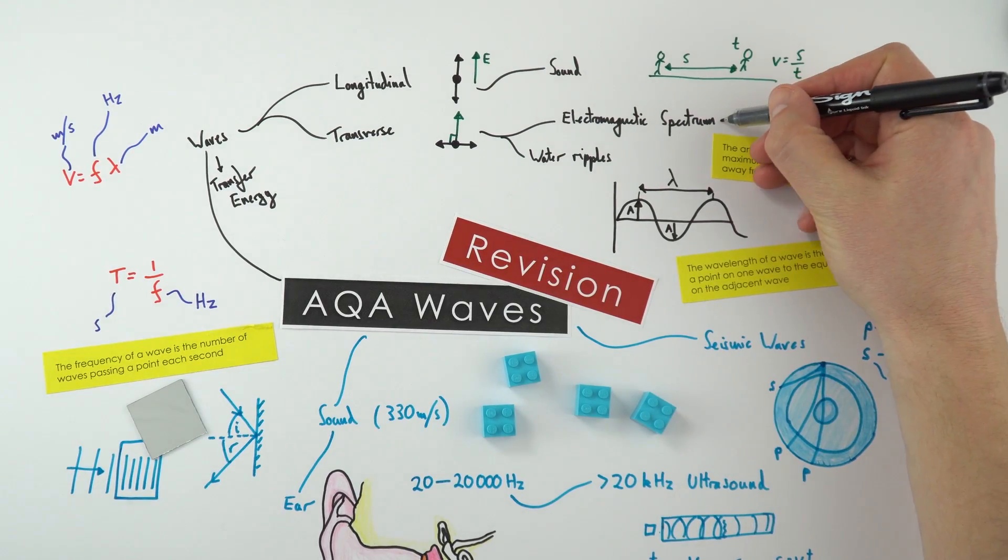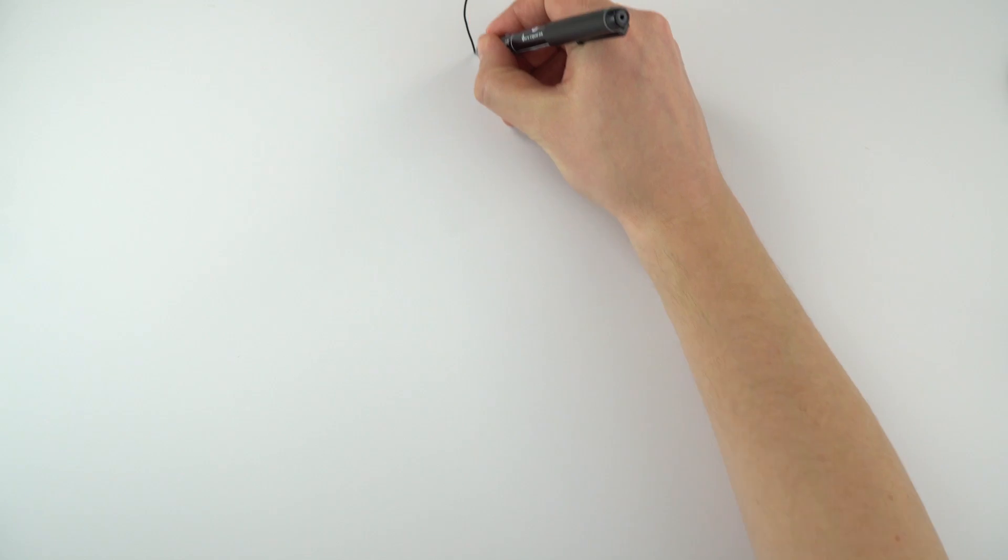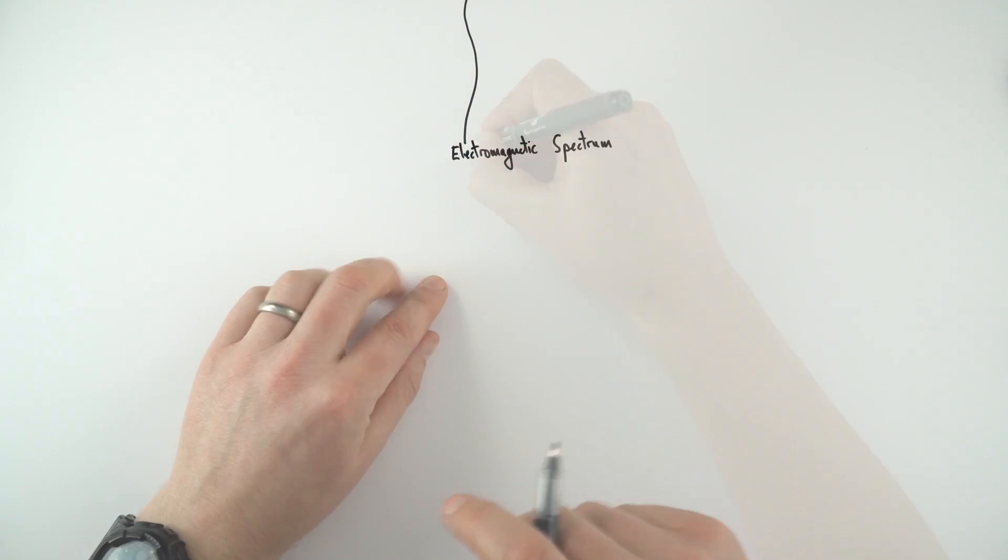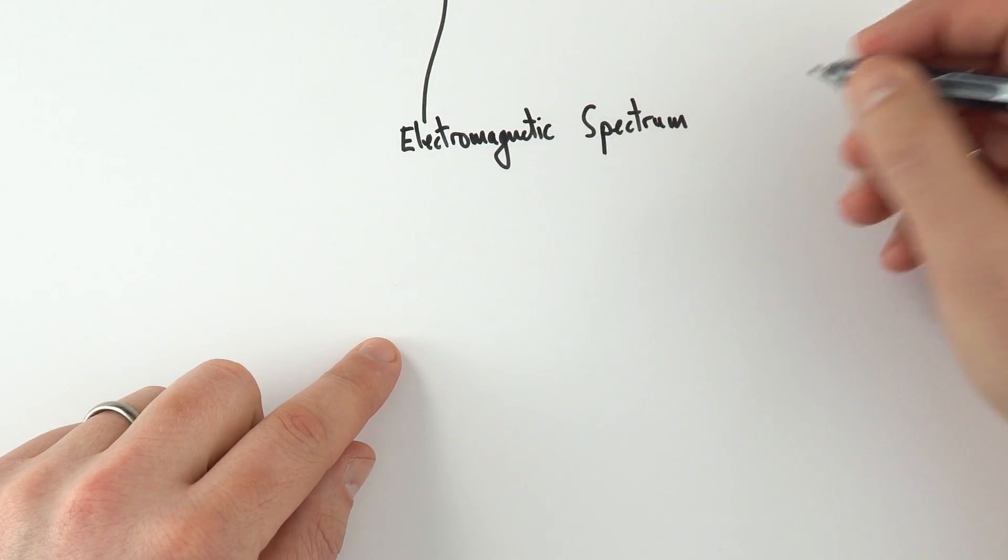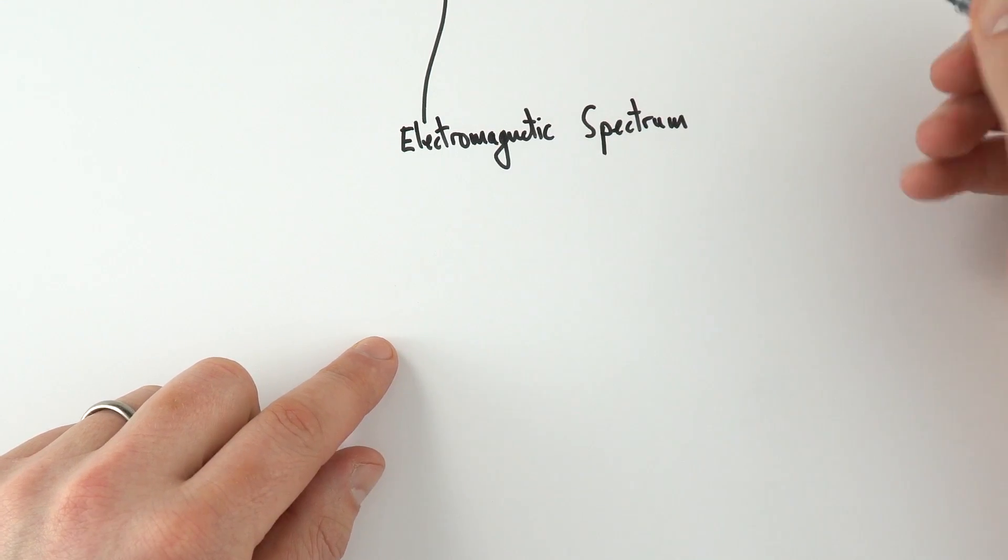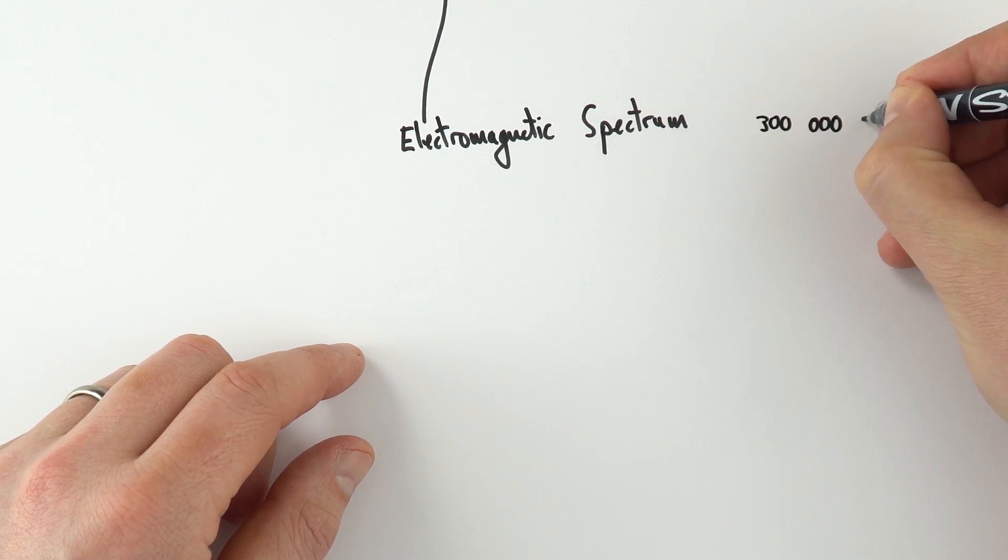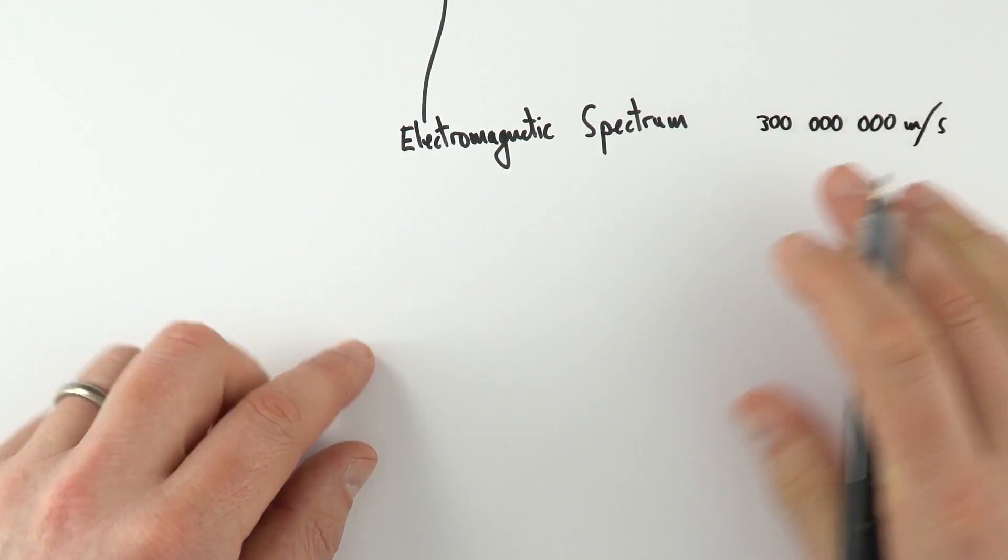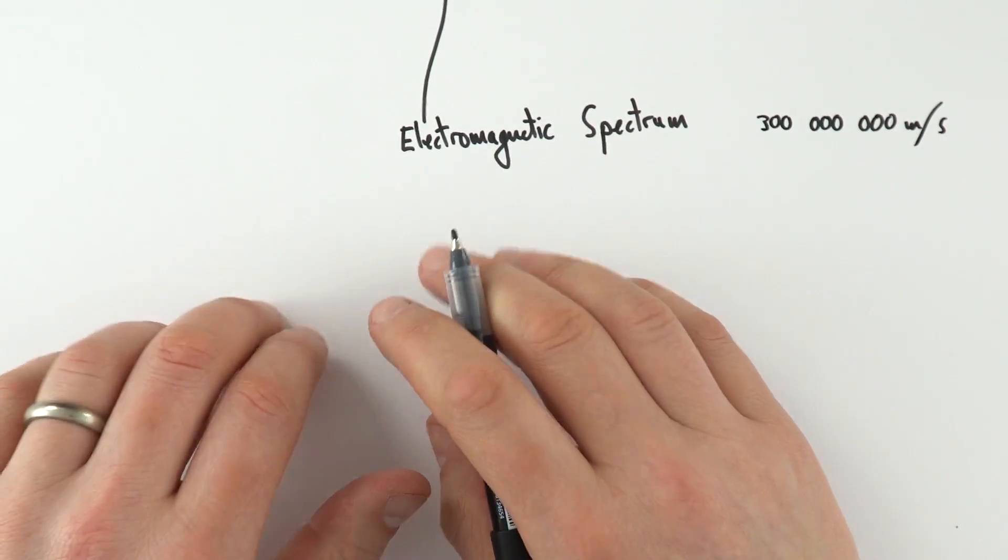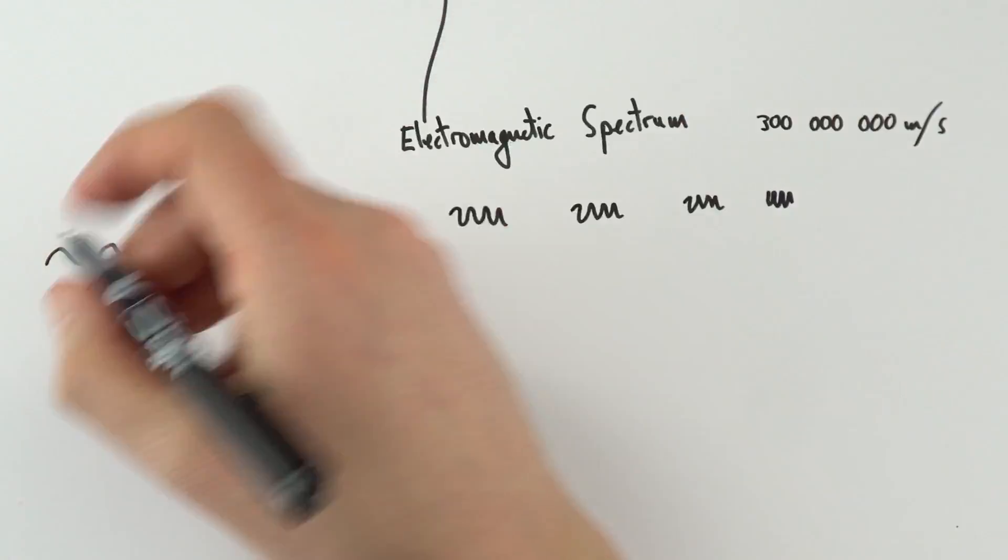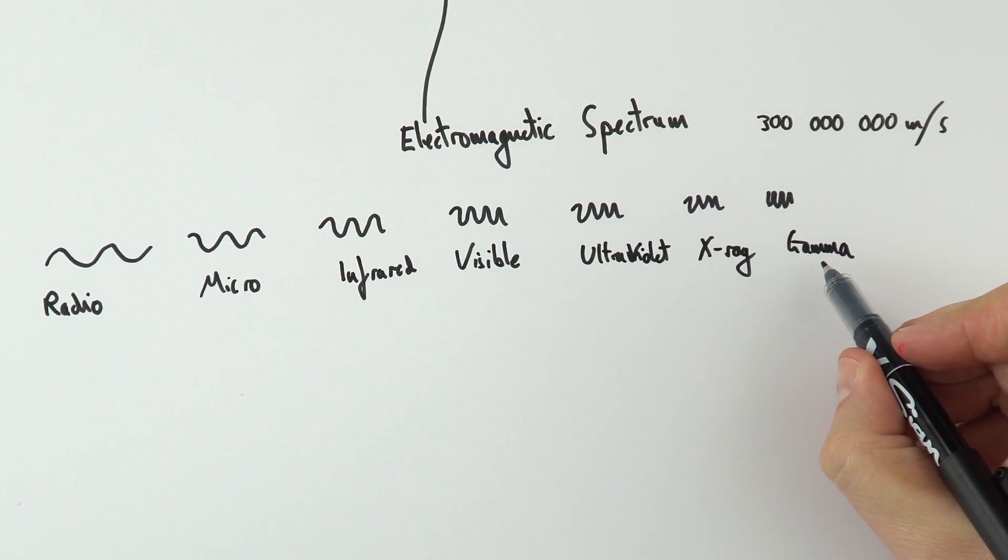Now let's look at the electromagnetic spectrum in a bit more detail. The electromagnetic spectrum is a whole series of waves, and all of these travel at the same speed through a vacuum. This is also the speed of light, which is 300,000 metres per second. There are seven main categories of waves that we're interested in.